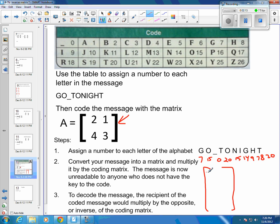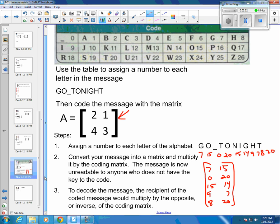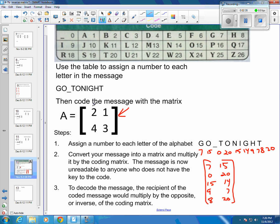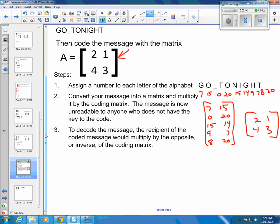I need to make this into a something by 2. So I'm going to start filling in my numbers. So my first number is 7. My second number is 15. Then I had a 0 and a 20. And I'm just going to take the numbers in order, 15 and 14. And then 9, 7, and 8, and 20. And once I have that all together, then I'm going to actually multiply that by my coding matrix. So I'm going to put my coding matrix over here. So it is 2, 1, 4, 3. Again, you can put whatever numbers you want in your coding matrix. As long as you know what it is and the person you're sending the message to knows what it is, it all works out fine.